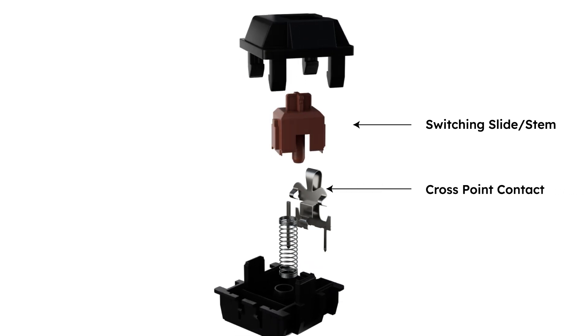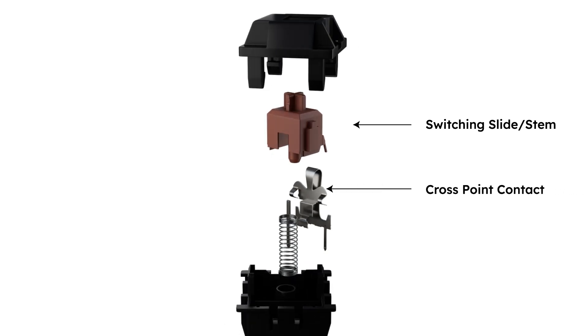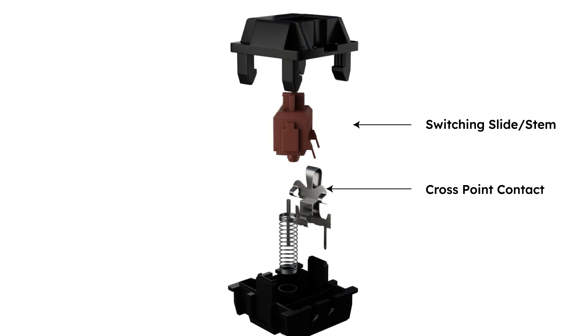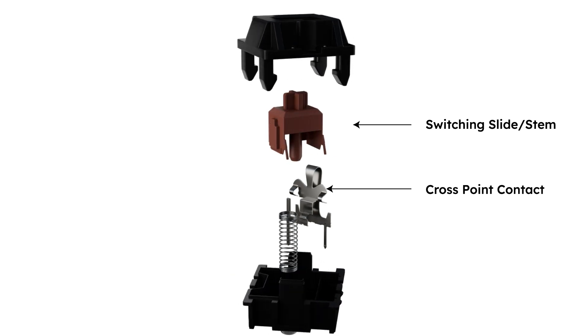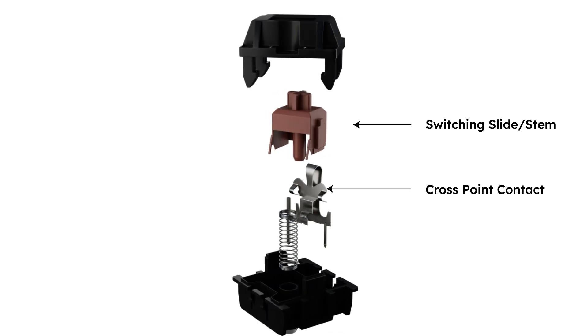Second, the cross point contact is a metal or gold piece which electricity passes through. Once the key is depressed and the switching slide touches the cross point, a key press is registered.